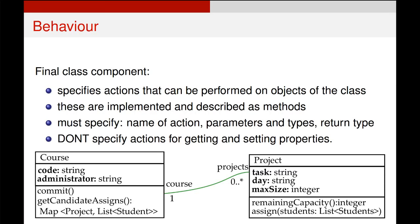The second example is slightly more complicated. The getCandidateAssigns method essentially gets all of the projects a particular student is assigned to, or gets all the students that are assigned to a particular project.